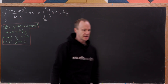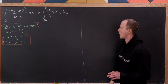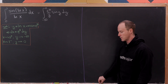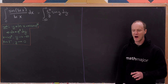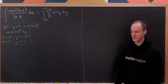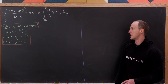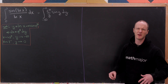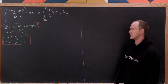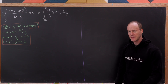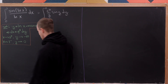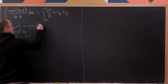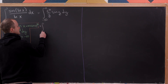Integrating sine of y times e to the y can be done with integration by parts, but that y in the denominator is problematic. So we need to do something to work with that y or to get rid of it.